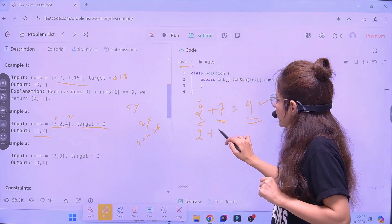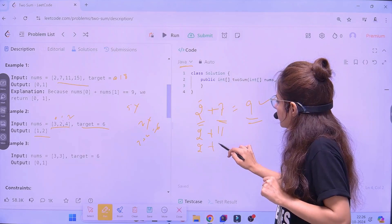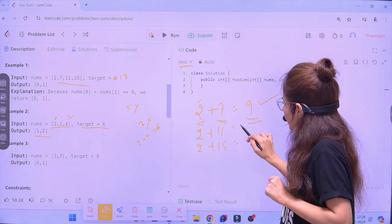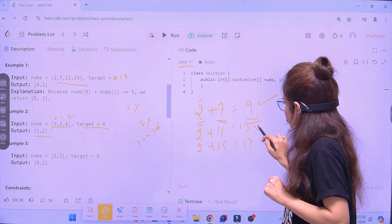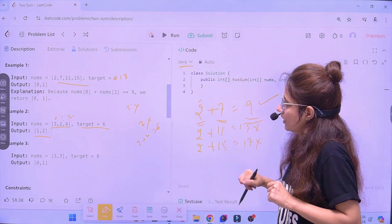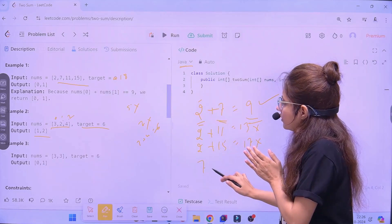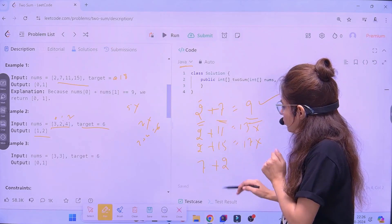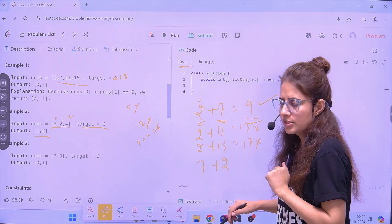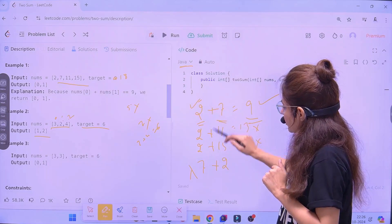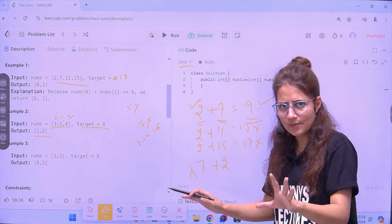Now, suppose here, sum is not 9. Sum is, suppose, 18. So, what you will check? 2 plus 7. Is it 18? No. Then, again, 2 plus 11. Then, 2 plus 15. It's 13 and it's 17. So, you will not get the solution till now. Then, okay, 2 is done. Now, we will take 7. Do you check 7 plus 2? Previous case, no. Because it is already done. 2 plus 7 or 7 plus 2, these are same.